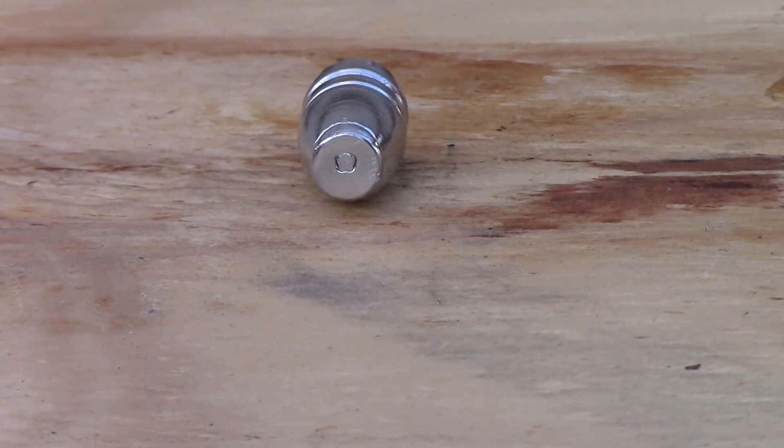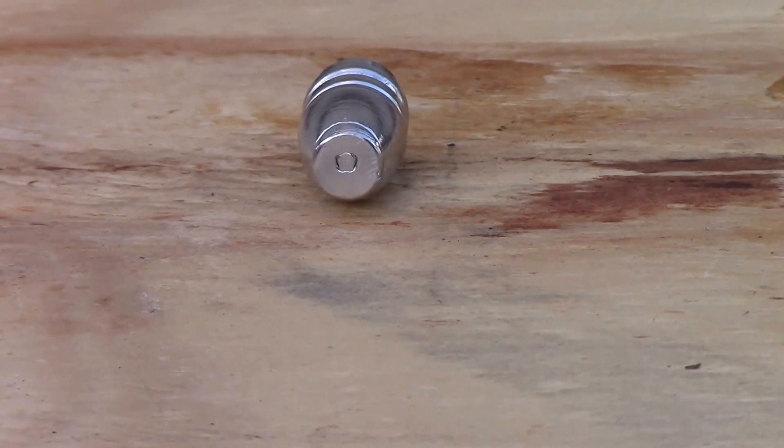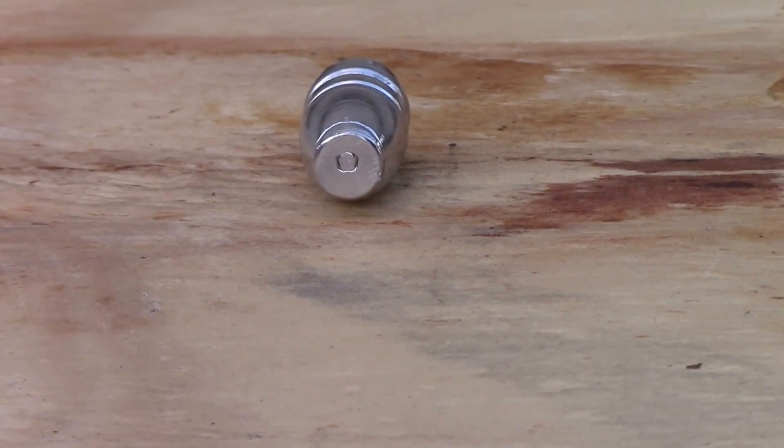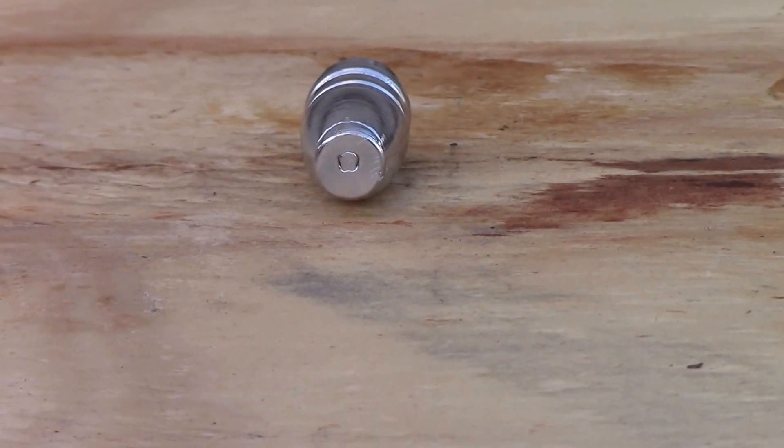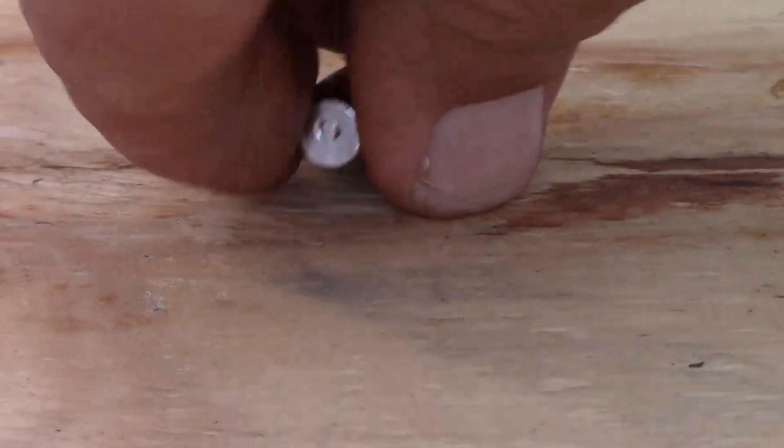The other thing is when you're doing a gas check on the back of a bullet, you want to make sure that base is nice and square. I'm going to get a different caliber bullet and kind of show you the difference. Both these bullets were rejects, but I'm going to go ahead and throw them up here to show you the difference.